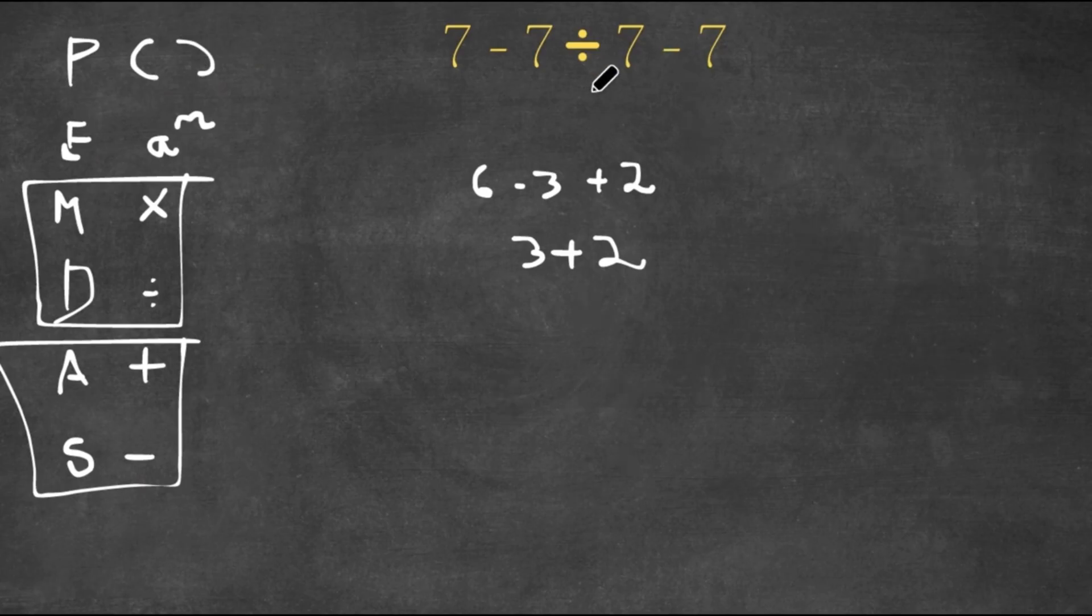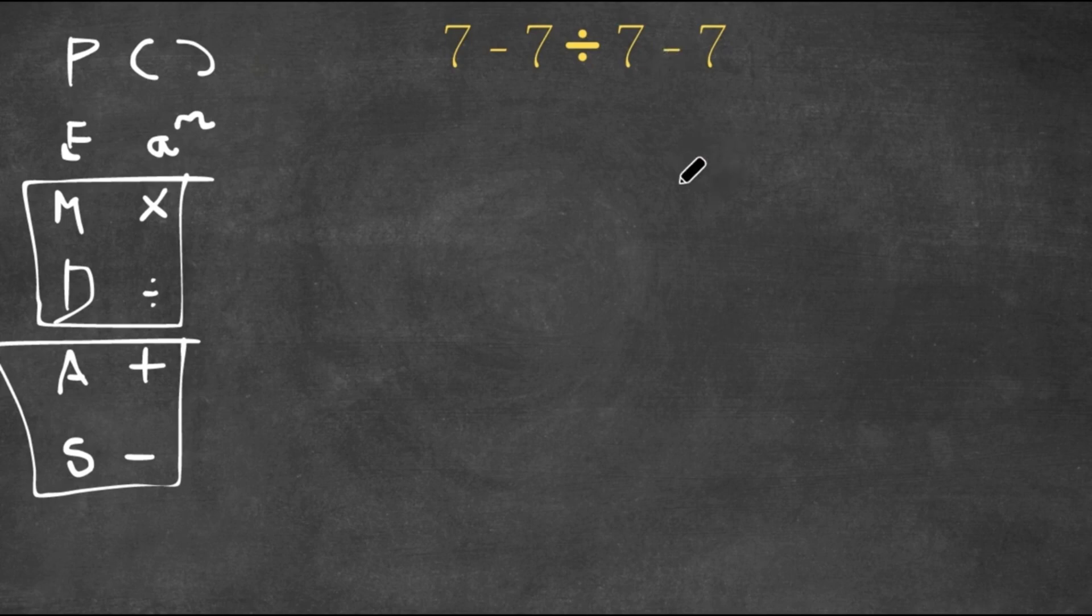So now let's go ahead and try to solve this problem: 7 minus 7 divided by 7 minus 7. So I first go to the start of PEMDAS, check for parentheses—there are no parentheses. Then I go to the next one, exponents—there are no exponents. Then I check for multiplication and division, and as I see, there is division, 7 divided by 7. So now I have to do the division: 7 minus 7 divided by 7 is 1 minus 7.